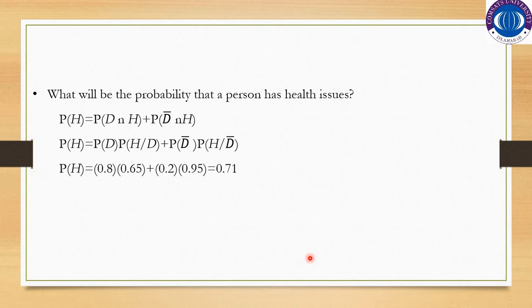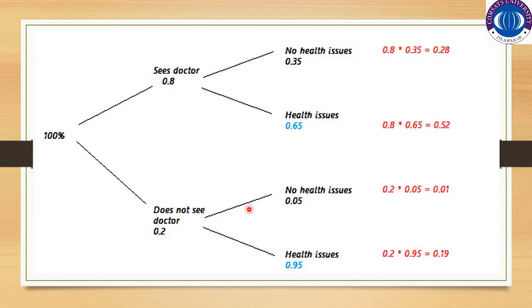Question five: what will be the probability that a randomly selected person has health issues? If you concentrate here, there are two cases in which the person would have health issues: number one, he or she sees the doctor and has health issues, or he or she does not see the doctor and has health issues.